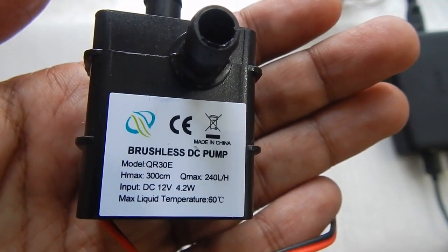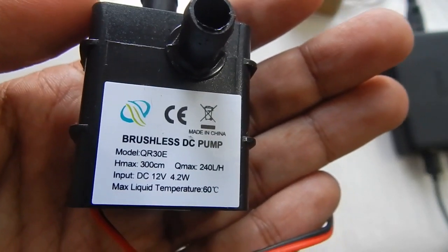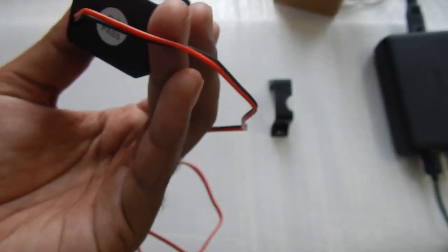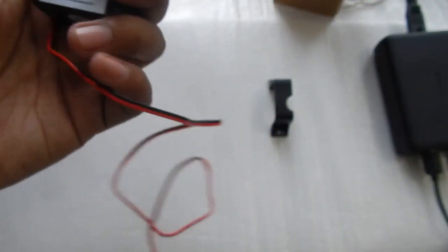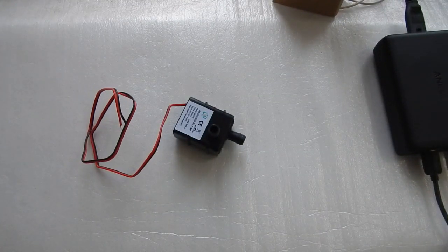As you can see the wattage on the pump is 4.2 watt. The maximum water it can pump is 240 liter per hour and it takes DC 12 volt. But on the product page it says that it can take 5 volt up to 12 volt.